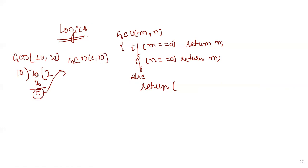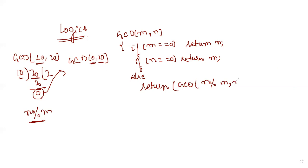In the else part we return the recursive call. Looking at our example of GCD(10, 20): we divide n by m using the modulo operator to get the remainder, and then call GCD again with the remainder in the m position and the old m in the n position. So the recursive call is: return GCD(n mod m, m). This is the core logic of the GCD program.